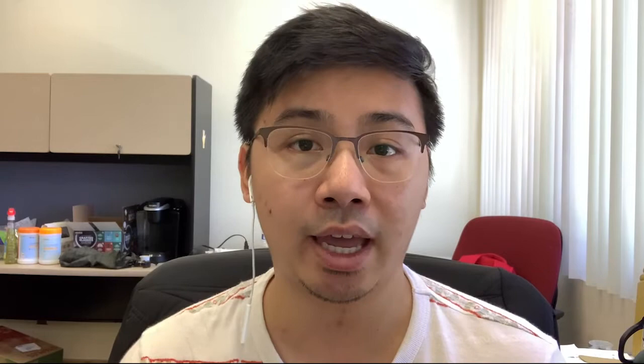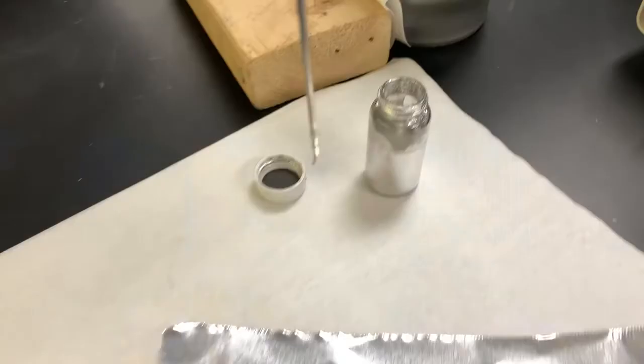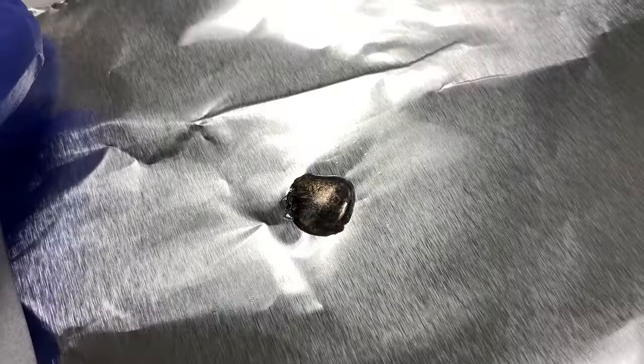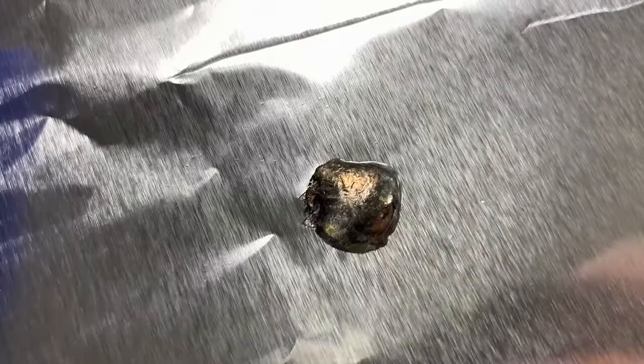Liquid metal embrittlement occurs when the liquid metal essentially diffuses in between the different atomic grains in the material, causing them to cleave or split apart. This causes the ultimate failure of aluminum substrates — simply applying liquid metal onto aluminum can completely destroy the material over the course of hours. Here I'm going to demonstrate this by placing a liquid metal droplet on top of a sheet of aluminum foil. As you can see, over time the liquid metal droplet starts to discolor and slowly works its way through the aluminum — and there it is: complete corrosion.